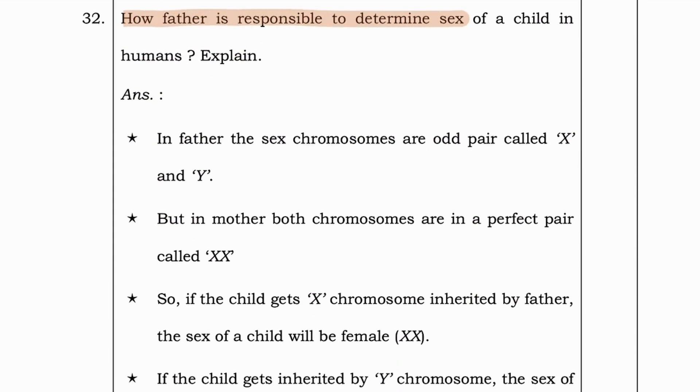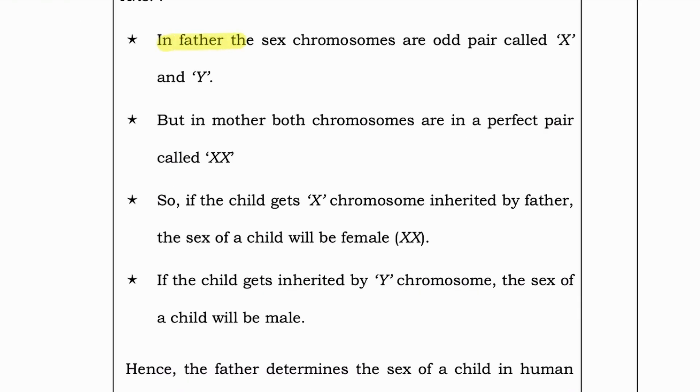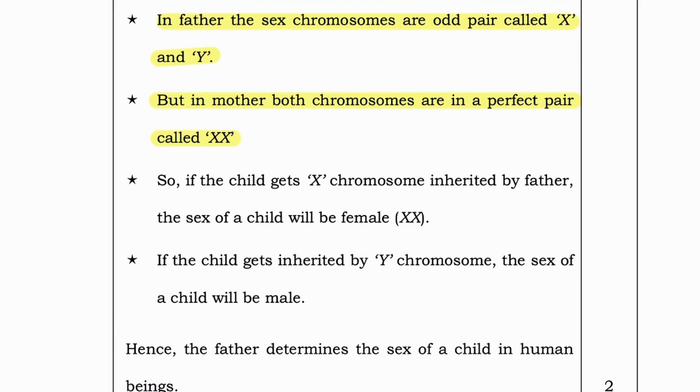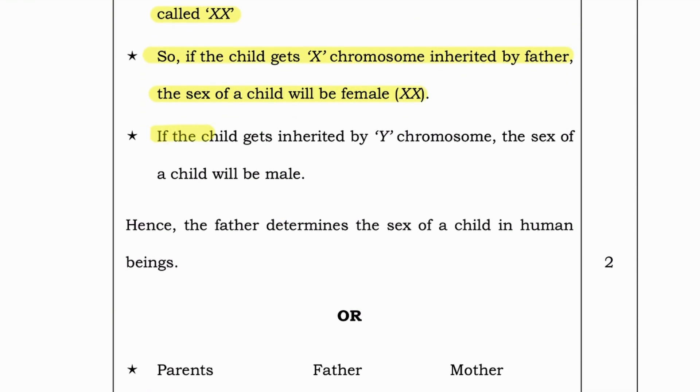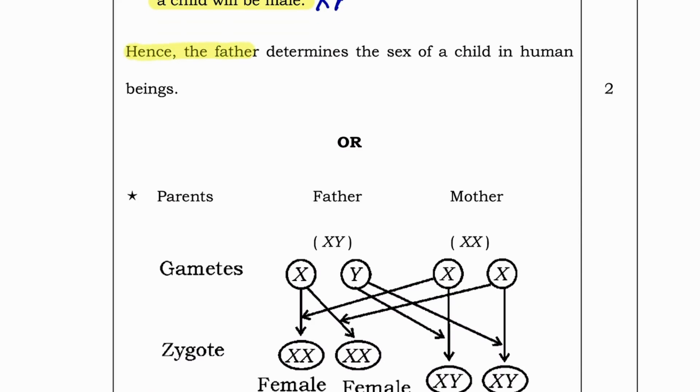How father is responsible to determine sex of a child in humans? Explain. In father, the sex chromosomes are odd pair called X and Y. But in mother, both chromosomes are in a perfect pair called XX. So, if the child gets X chromosomes inherited by father, the sex of the child will be XX. If the child gets inherited by Y chromosome, the sex of the child will be male. Means X and Y. Hence, father determines the sex of a child in human beings.